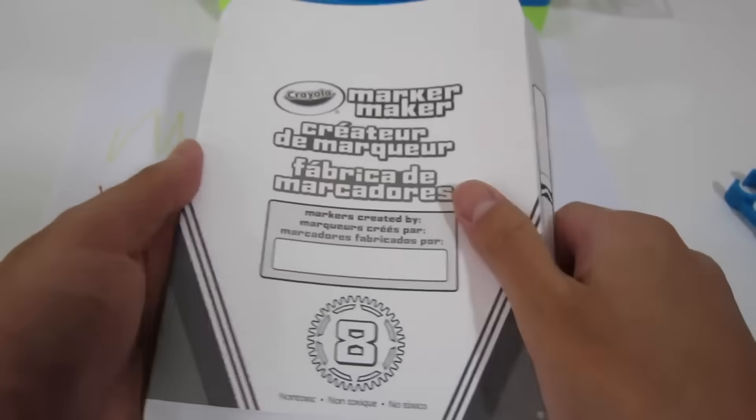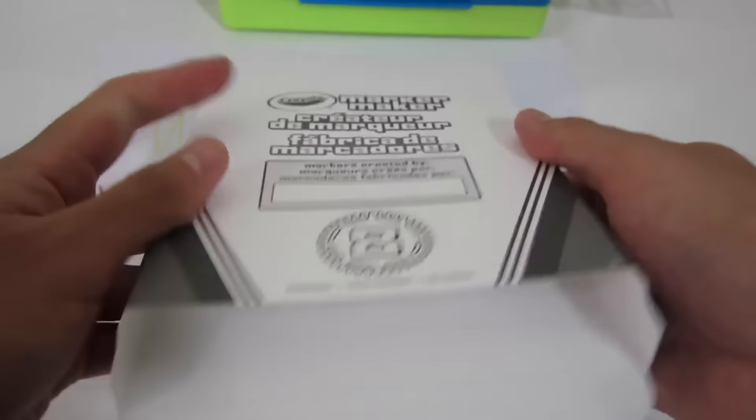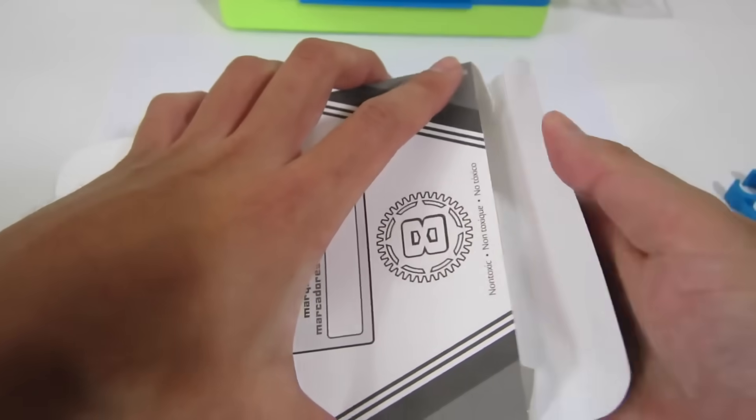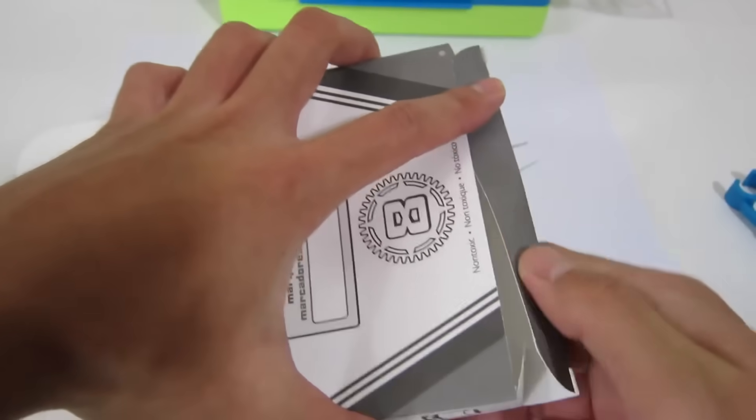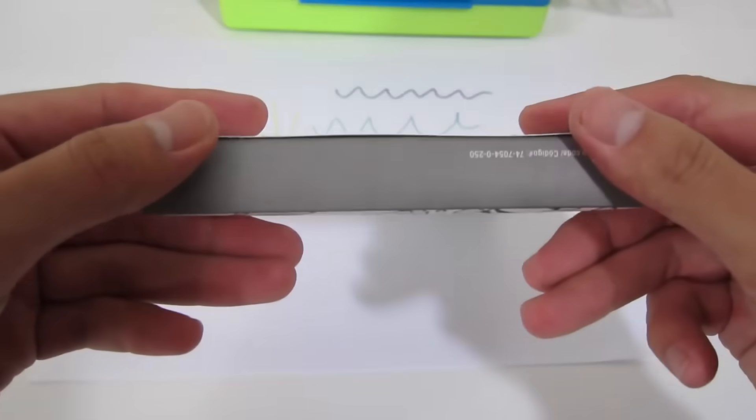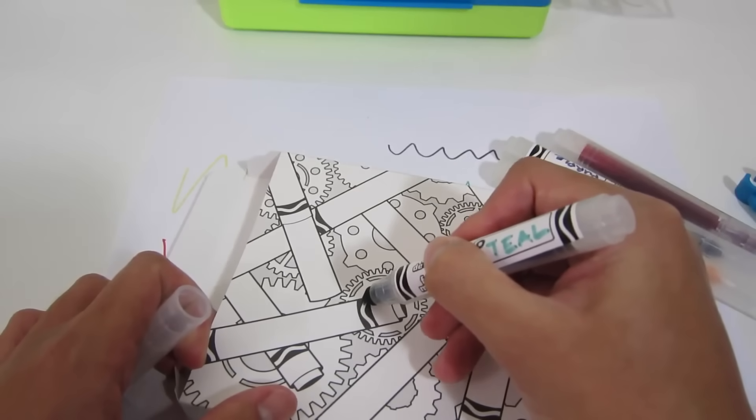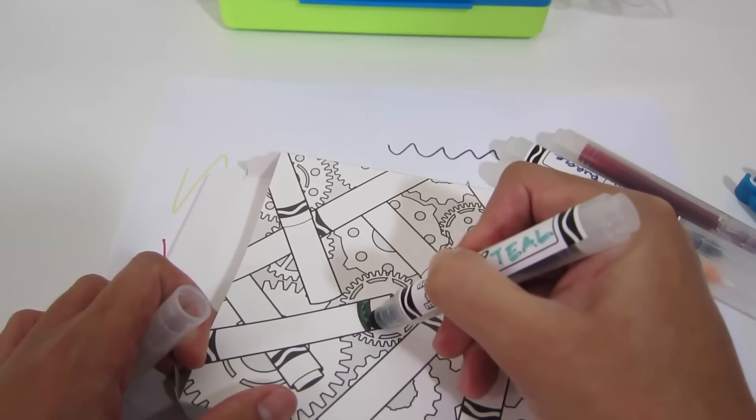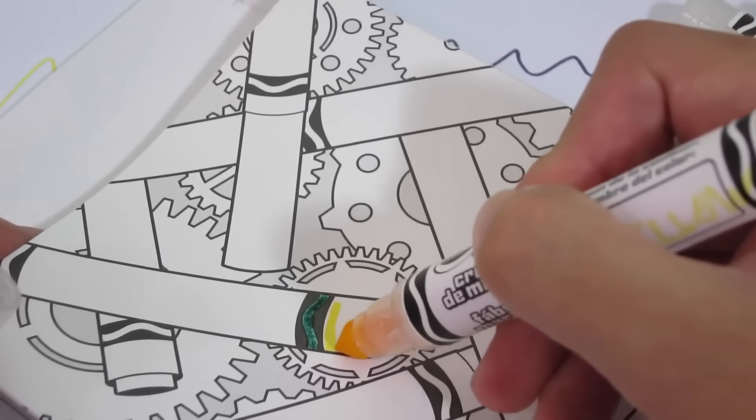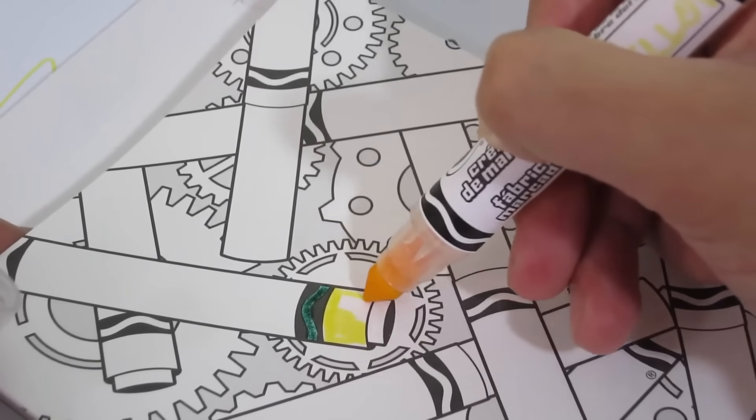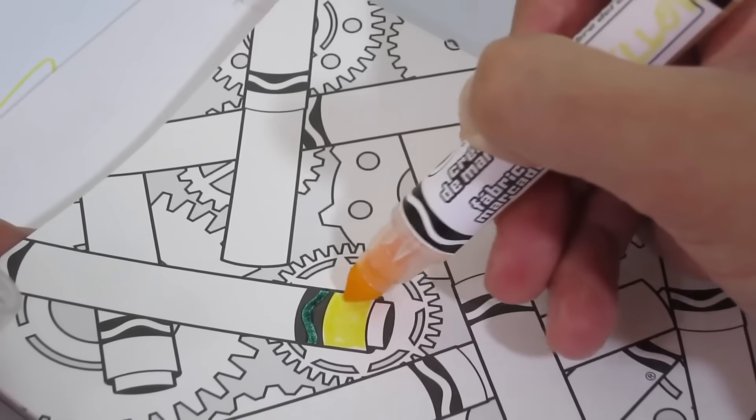Now let's create our marker box. This is really cool. We can also use our Crayola markers to design the back of our marker box. This is really neat.